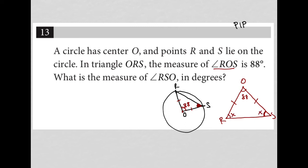I'm just calling them both Xs. So in essence, I have X plus X plus 88. And because we're inside of a triangle, we know that all three angles have to add up to 180. So when I simplify the math here, 2X plus 88 equals 180.